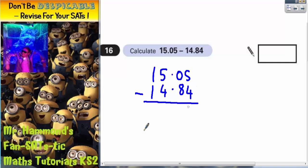All we've got to do now is work this out. 5 take away 4 is 1. 0 take away 8 we can't do, so we need to borrow one. That now becomes 10. 10 take away 8 we can do.